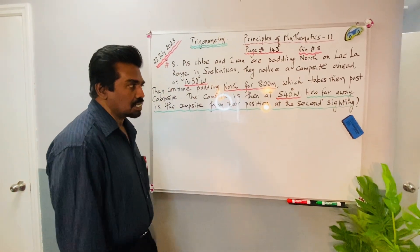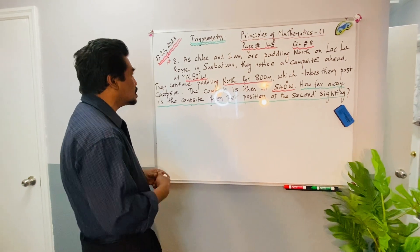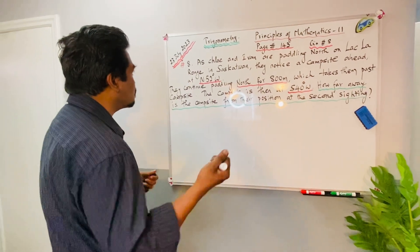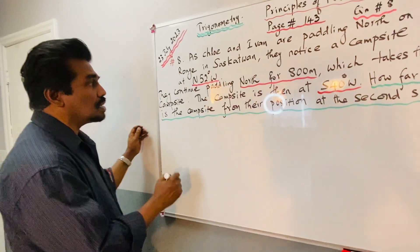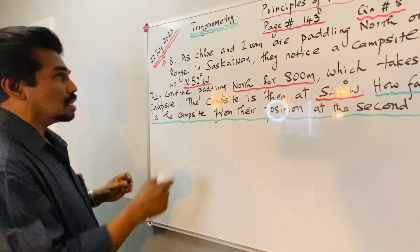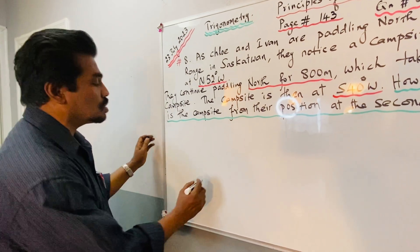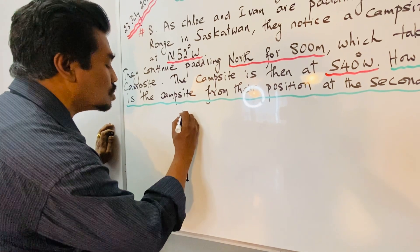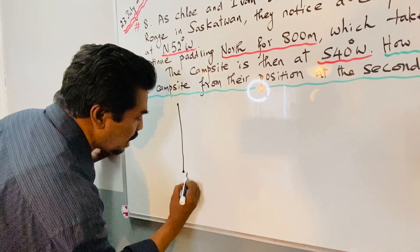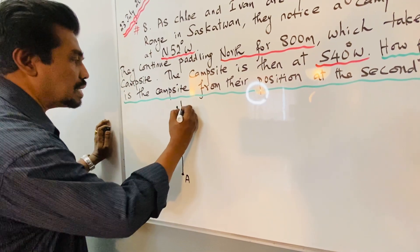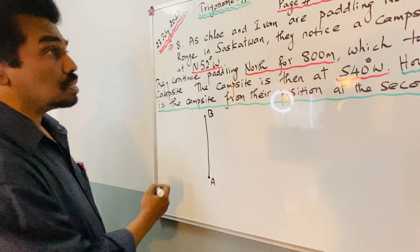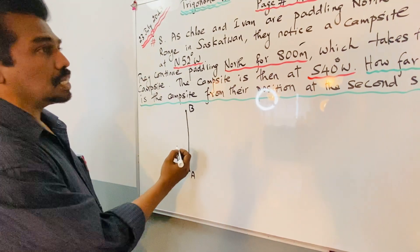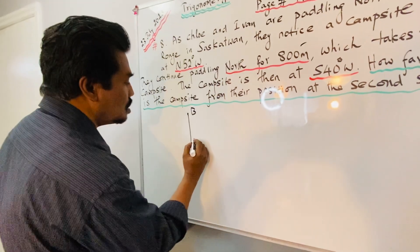Let us see the scenario and draw a picture. Chloe and Ivan are paddling north, so from here we can start from here to north. The starting point is A and now they are at B. 800 meters is mentioned here - not kilometers, 800 meters.